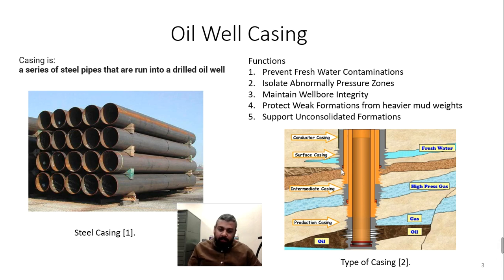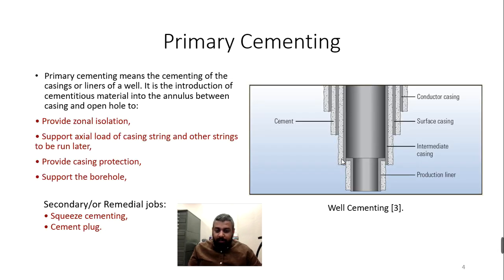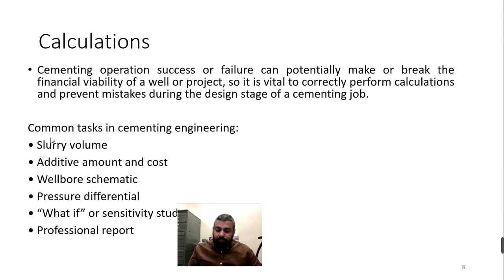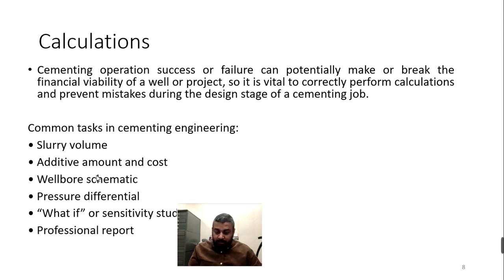The third question is: how much is the cost? The fourth question covers what-if scenarios — for example, what if there is an unconsolidated formation and there's a chance you lose cement into the formation? When we talk about calculations, we are looking at the amount of cement slurry volume needed, how much dry cement is required, how much water is needed, the cost, and what kind of well you are dealing with — vertical or horizontal.